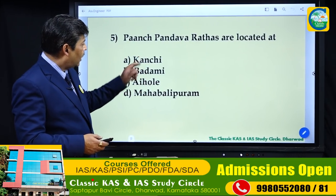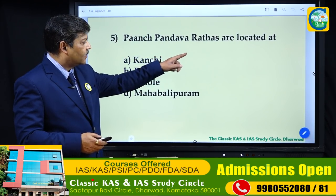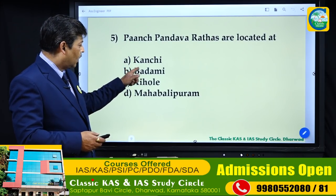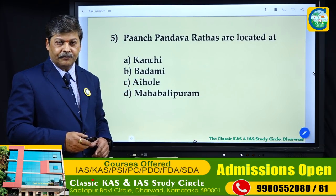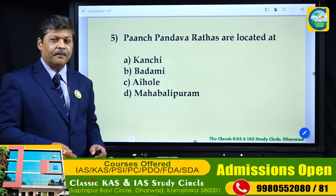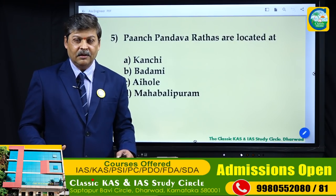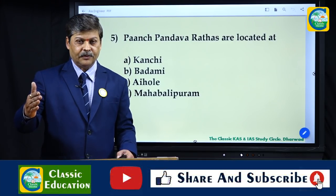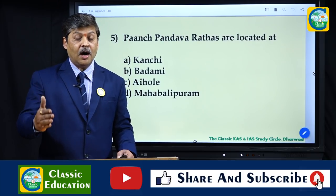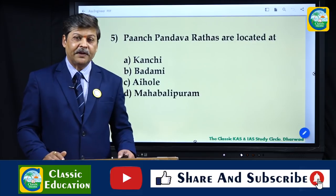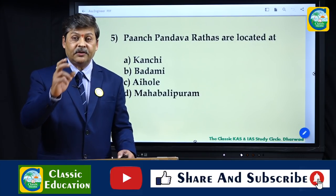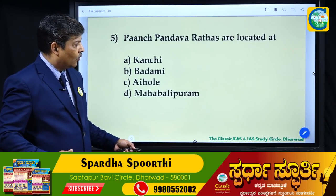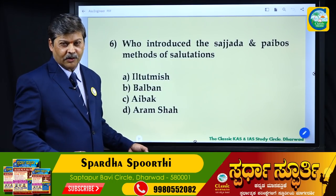The last question in the ancient part: where are the 5 Pandava Rathas located? Options are Pattadakal, Kanchi, Badami, and Mahabalipuram. The answer is Mahabalipuram in Tamil Nadu, situated 40 kilometers from Chennai on the east coast. The Rathas are monolithic temples found at Mahabalipuram.